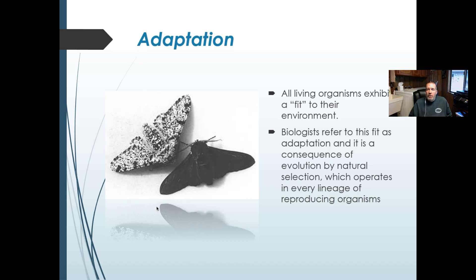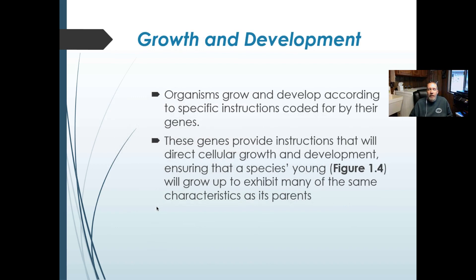All living things must adapt to their environment — they either find a way to fit their environment or they may go extinct. Life comes and goes on this planet; living things evolve and adapt, sometimes surviving for a very long time, while other times organisms lack the ability to adapt and go extinct. We'll talk more later in the semester about natural selection and the theory of evolution, often called survival of the fittest.